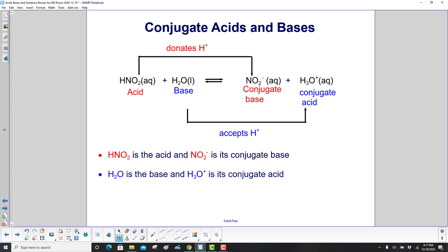So what we have here is nitric acid is the acid and nitrite is the conjugate base. Then we have water as the base and the hydronium ion as its conjugate acid.